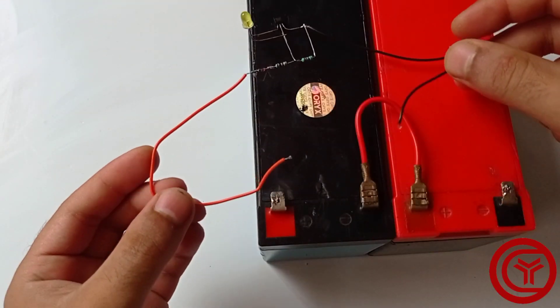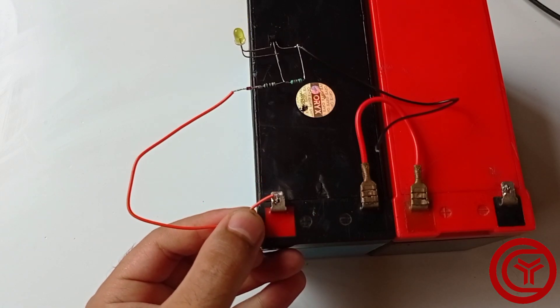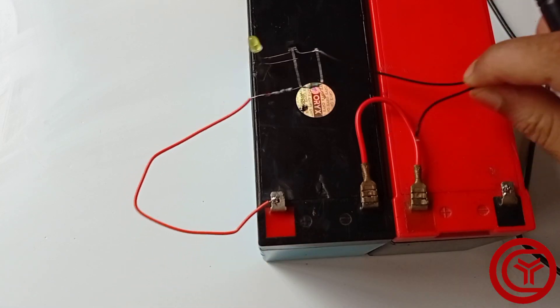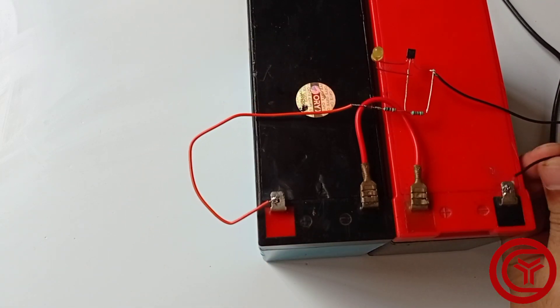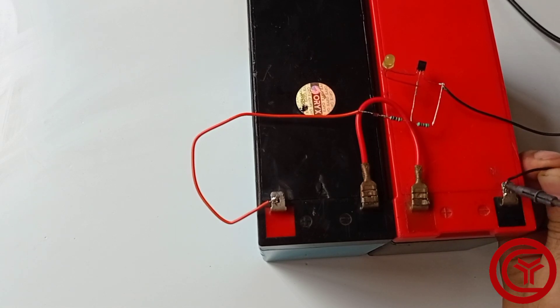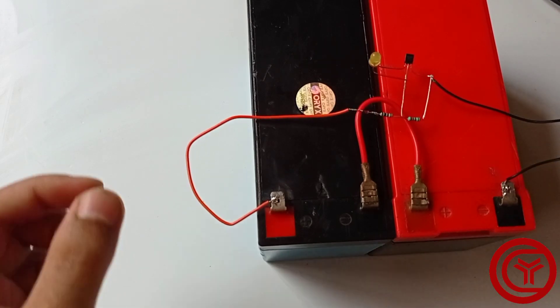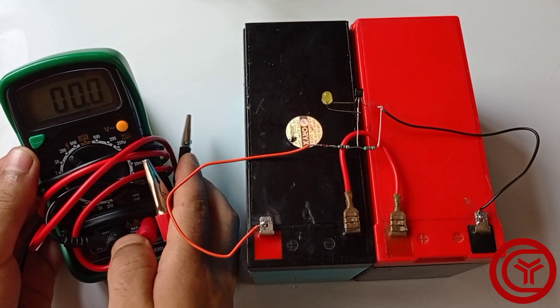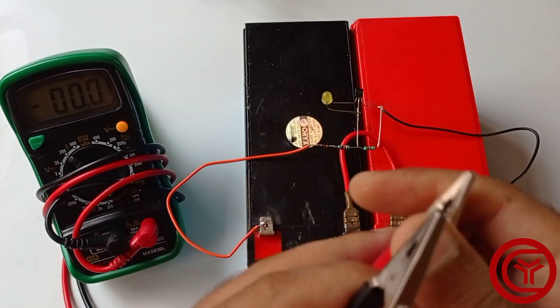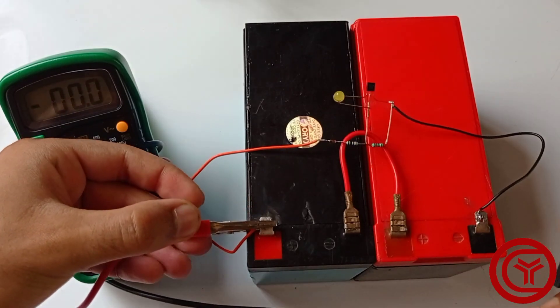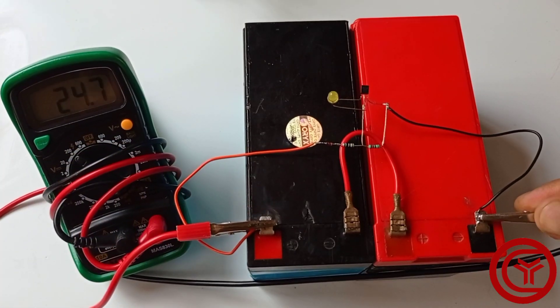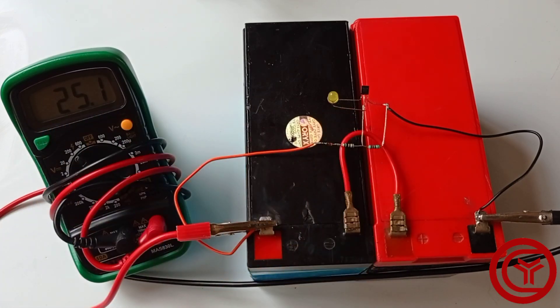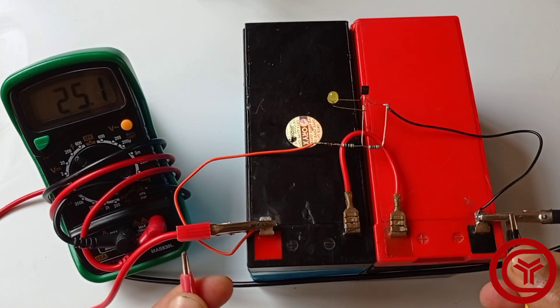Now let's connect the circuit with battery. I connected multimeter again to track voltage. You can see battery is already 25.1V charged and LED is not glowing. And I will connect 28V DC supply.